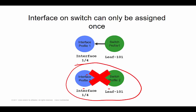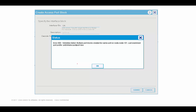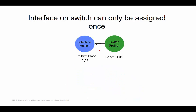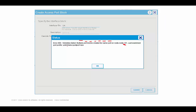What you would get in ACI is this error message: Error 400, multiple port blocks created for same port node on LEAF 101. So, if you're creating a new chain of access policies and you want to figure out what has already been assigned to an interface profile and switch profile — so you don't get that error message — the easiest way to figure that out is there's something called the quick start wizard.